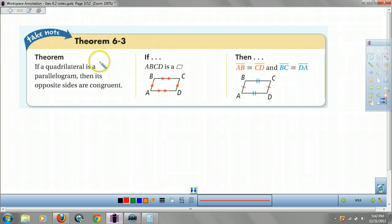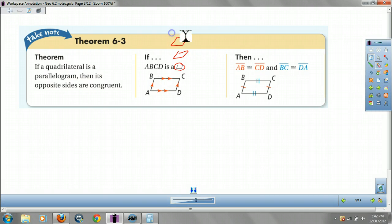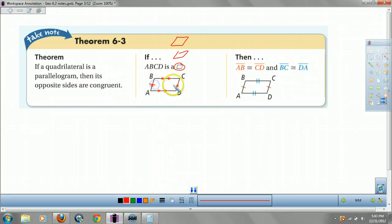If a quadrilateral is a parallelogram, then its opposite sides are congruent. So if you know this is a parallelogram, that's the symbol for a parallelogram. Then the opposite sides are congruent. So the sides that are parallel to each other are congruent. So like AB and CD, and BC and AD.